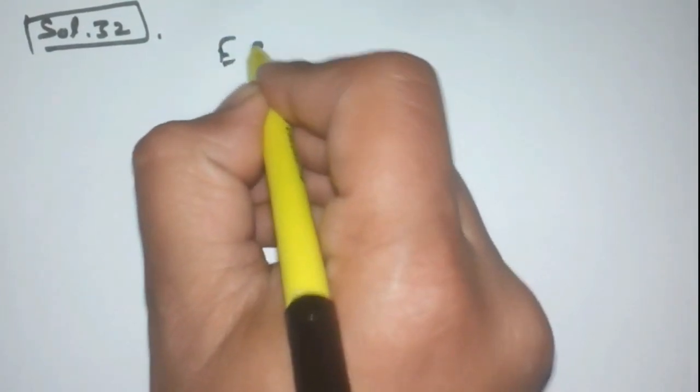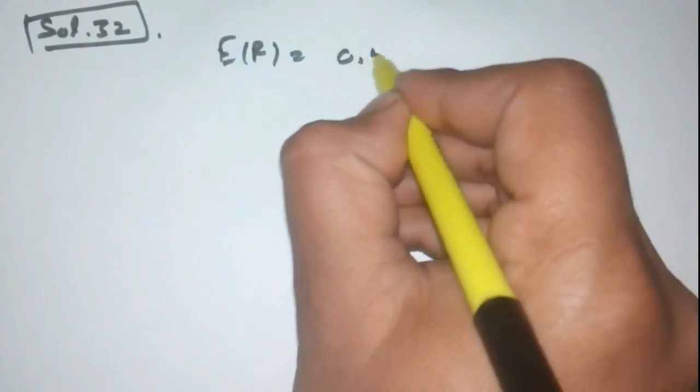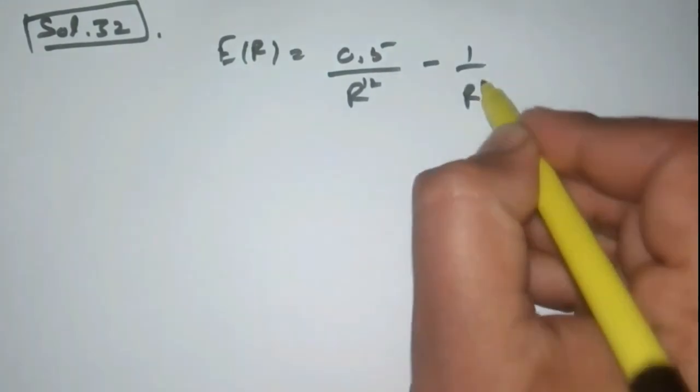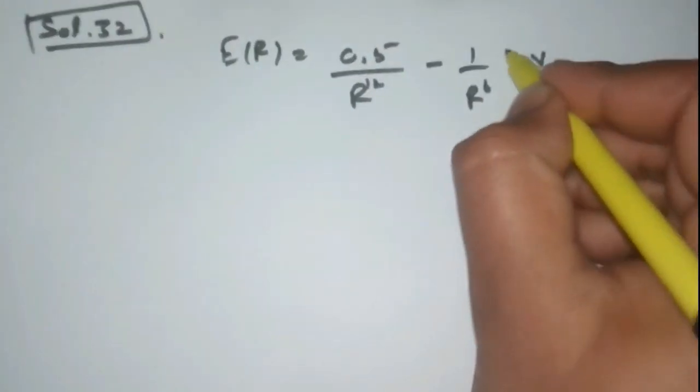So in this question you have to calculate the separation between the atoms. And you are given the energy of the system which is E(R) equal to 0.5 upon R^12 minus 1 upon R^6 in terms of electron volt.